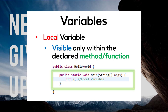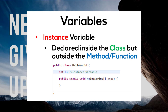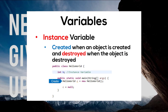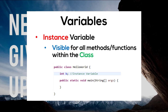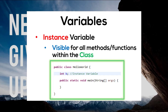Next we have the instance variable, and they are declared within the class but outside the method. Instance variables are created when an object of the class is created and destroyed when the object is destroyed. The instance variables are visible for all the methods within the class. It's okay if you don't fully understand this concept at this point because we are going to talk more about classes and objects in a later episode.